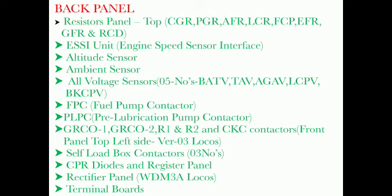Front panel top left side, version 3 locos: Self Load Box Contactors — 3 in number. CPR Diodes and Resistor Panel, Rectifier Panel. WDM3A locos terminal boards.